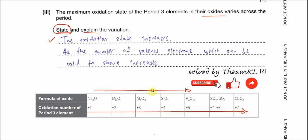You can link this to their valence electrons: sodium is group 1, magnesium group 2, aluminum group 13, and so on. Sodium has one valence electron, magnesium two, aluminum three, and so on. Therefore, the oxidation states of these period 3 elements are determined by the number of valence electrons which can be used or shared.